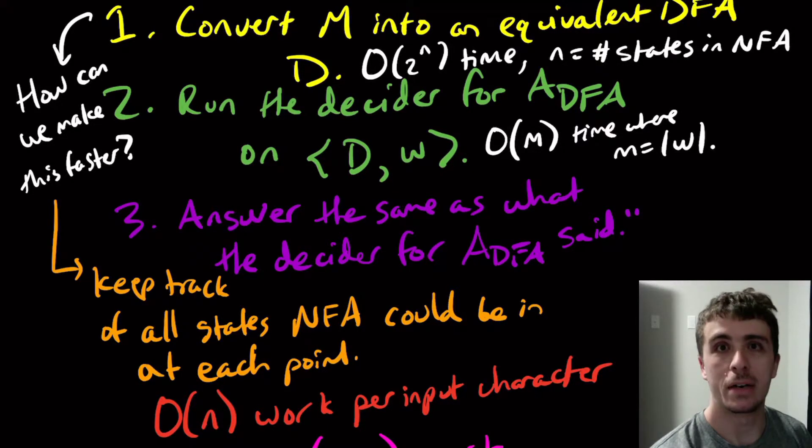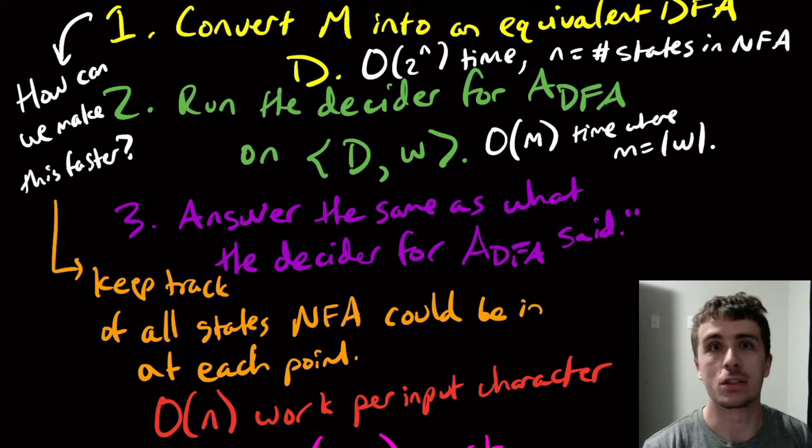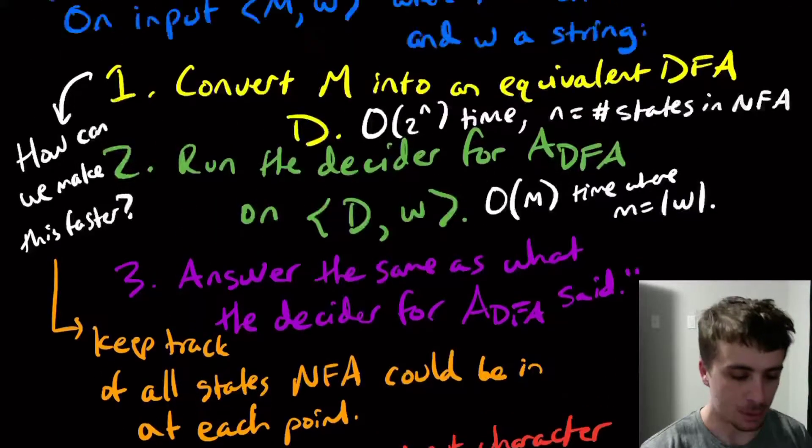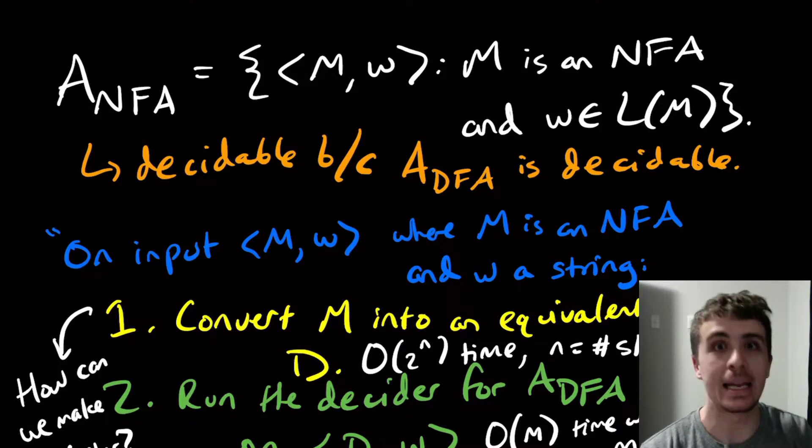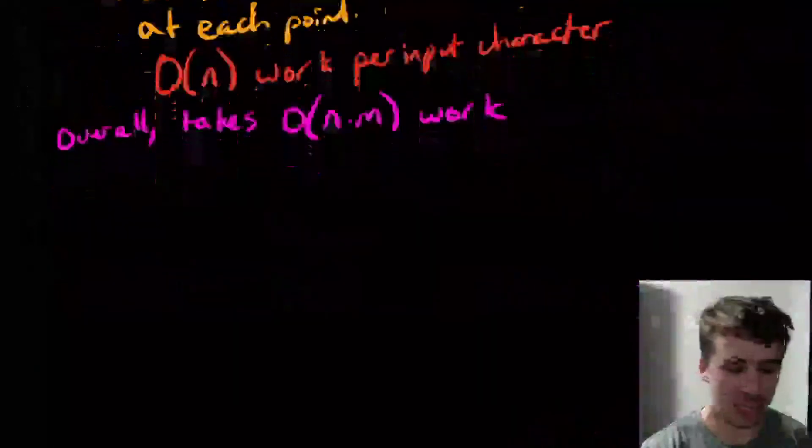Hi, welcome to another edition of Easy Theory. So let's continue the problems and showing that they're decidable for acceptance problems. We showed that a sub dfa and a sub nfa were both decidable. Let's talk about regular expressions.